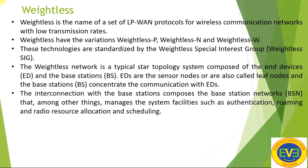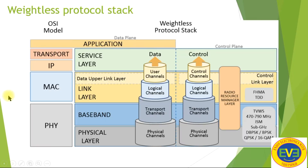When base stations are interconnected, they form the Base Station Network, which manages things like authentication, roaming, and radio resource allocation. Next is the Weightless protocol stack. Its physical layer contains physical channels and baseband. The transport channel is also part of the physical layer.